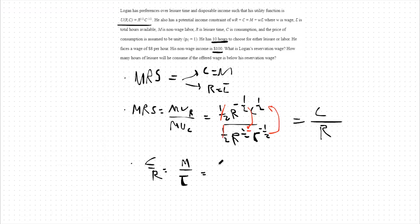Our non-wage income is given to us as 100, and our total number of hours available to us is given to us as 10 hours.